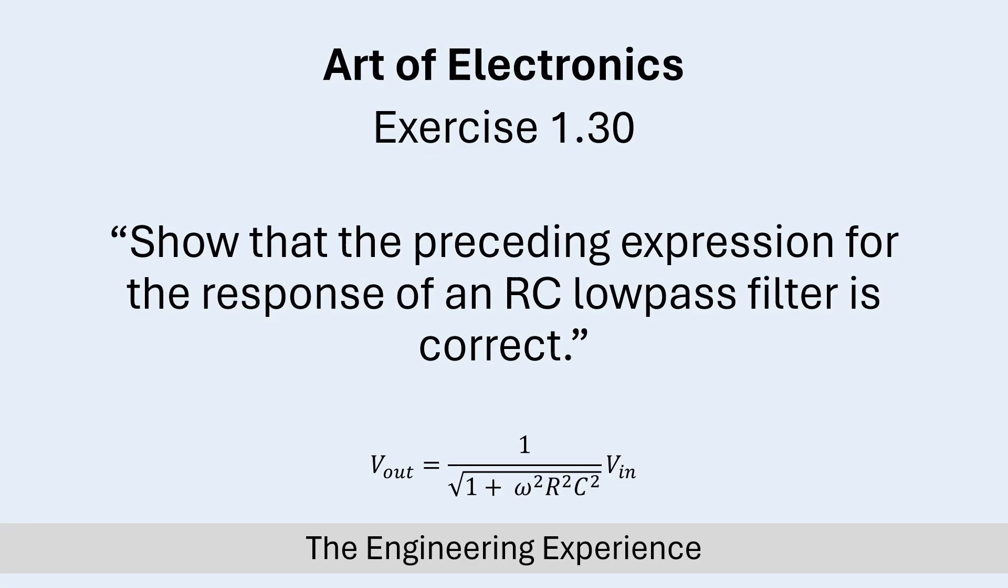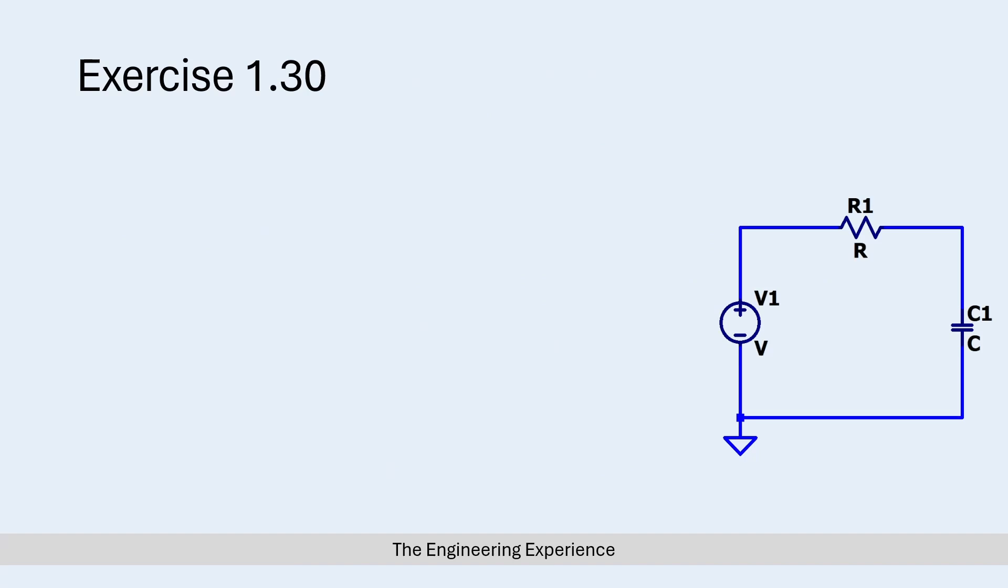Just going through what a low-pass RC filter looks like: we have a series resistor with a capacitor, and your load would be connected to this point and the ground over here.